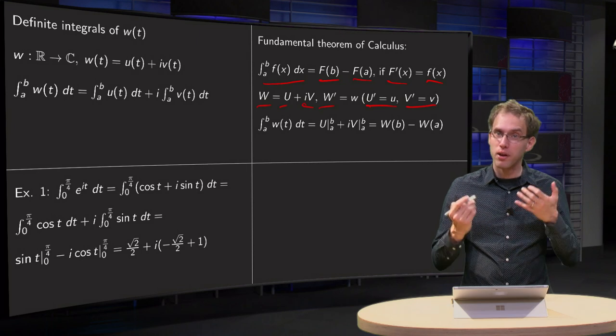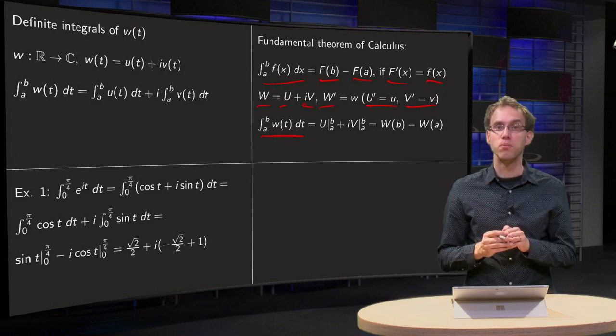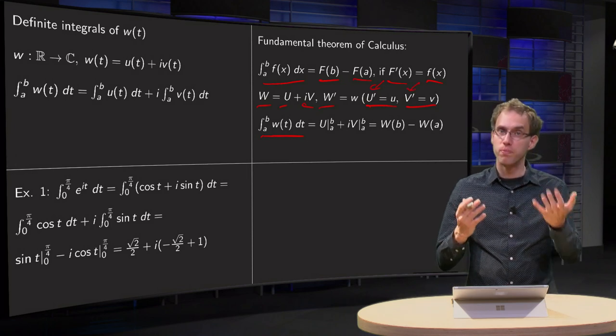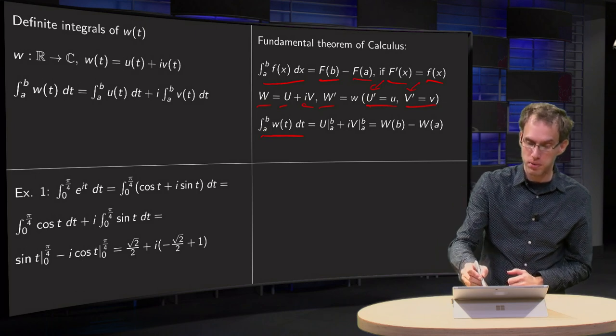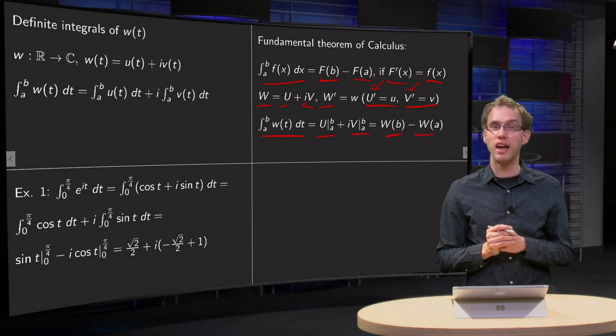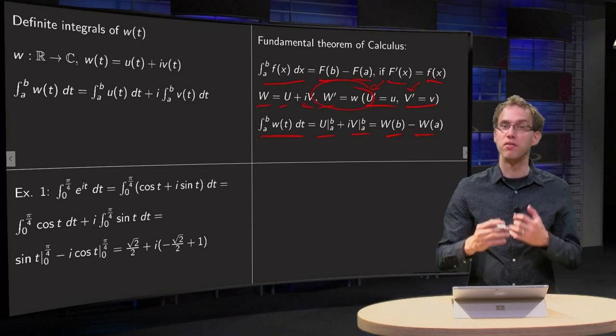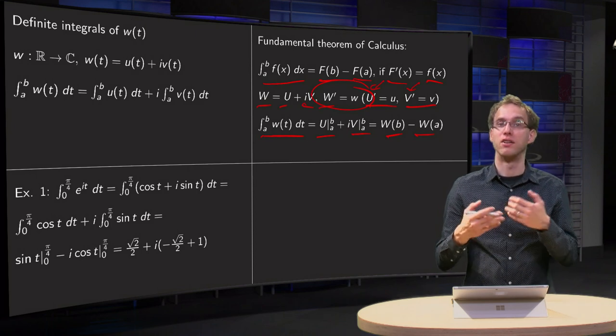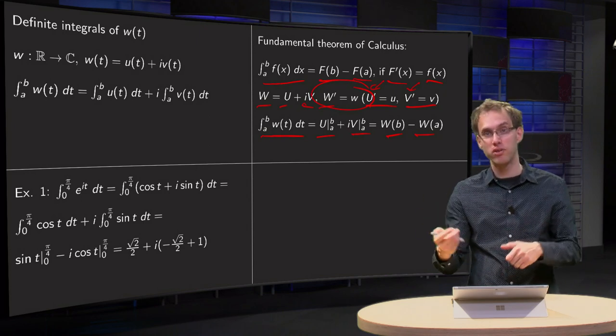So if we try to apply the fundamental theorem of calculus, we want to integrate W, we have to split it into two parts. Suppose we have those separate antiderivatives, capital U and capital V, then we get as our antiderivative capital U plus i times capital V, which is between the boundaries, which is the same as capital W(b) minus capital W(a). So we can apply the fundamental theorem of calculus if we are able to find an antiderivative capital W of our function small w. And that's in the real case always a problem, and in the complex case as well of course, because you have to find a function capital W such that if you differentiate that you get your small w back again.